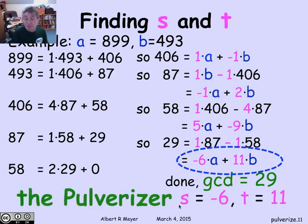I've just figured out that possible values for S and T are minus 6 and 11. And this is a perfectly general procedure that will always give you coefficients S and T that express the GCD of A and B in terms of A and B.